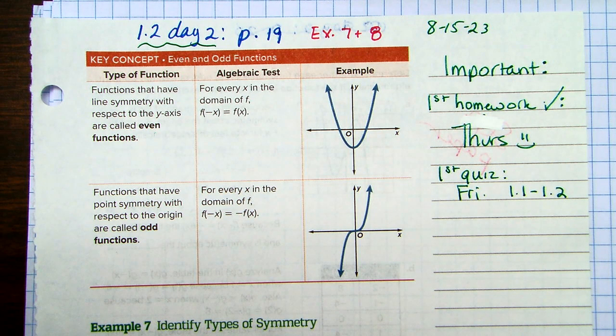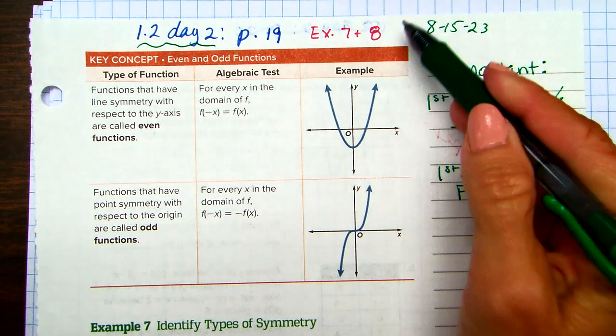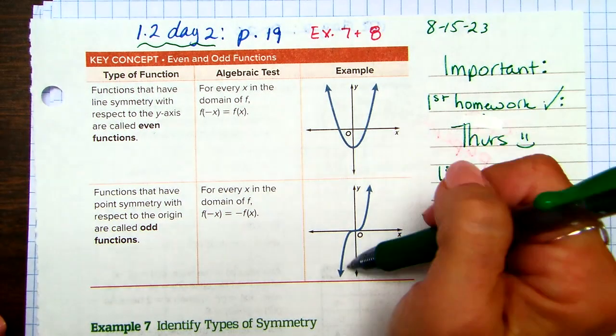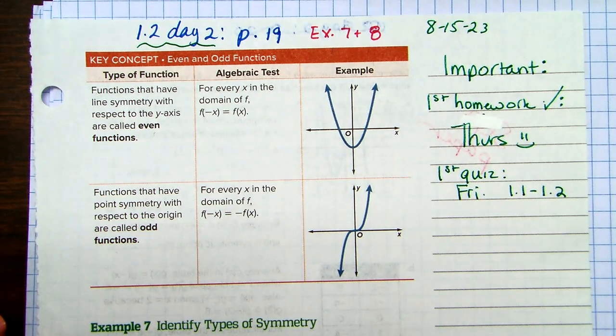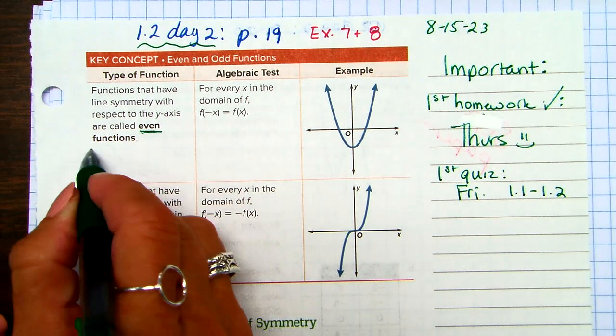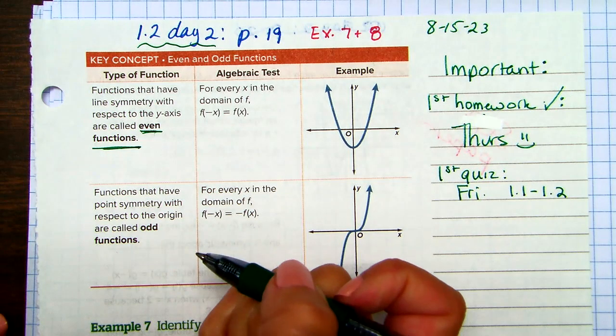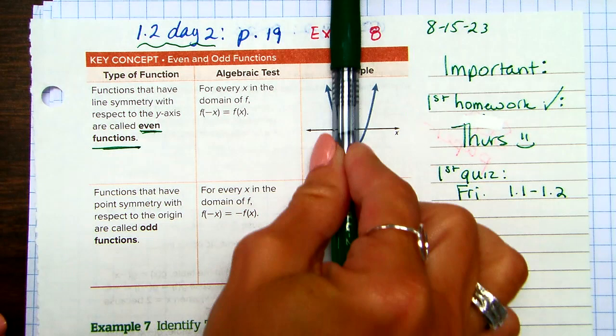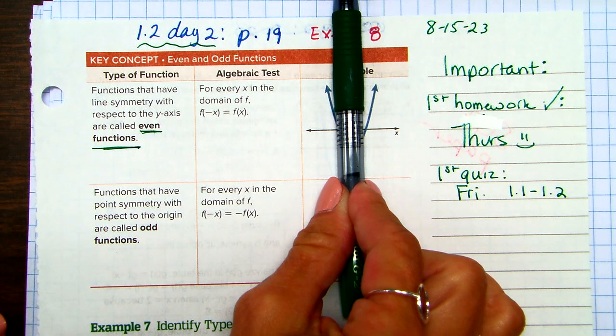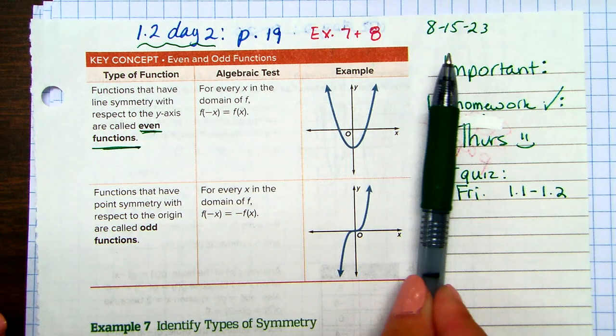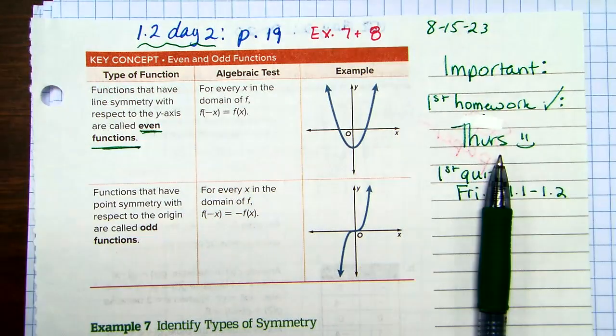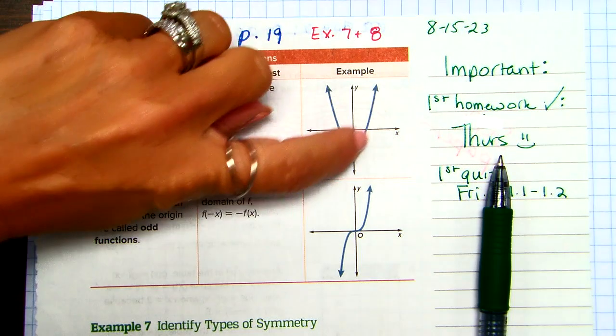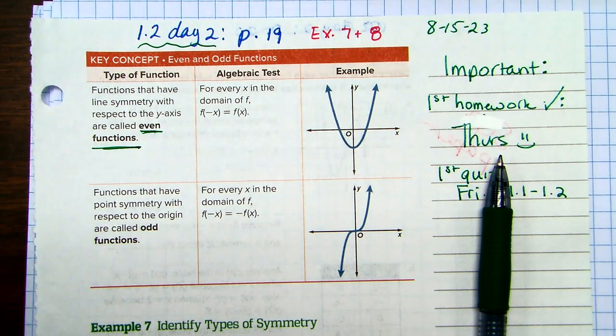There's basically two types of symmetry we're going to be talking about in this class, and they're really important. They come up quite a bit. There's even and there's odd. So whenever there's symmetry, you're going to say it's either even, odd, or it could be neither. So even functions have a line of symmetry with the y-axis.